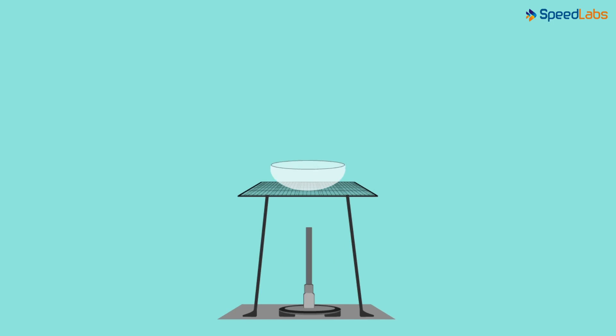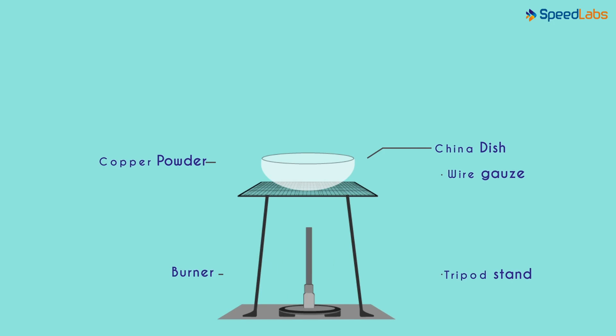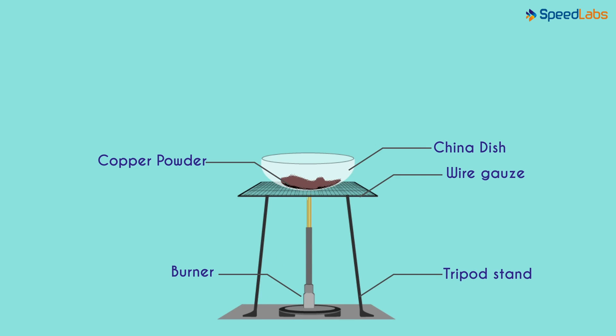Let's perform a small experiment. Take some copper powder in a china dish and heat it. After some time, you will notice that the surface of the copper powder turns black. Why does that happen?